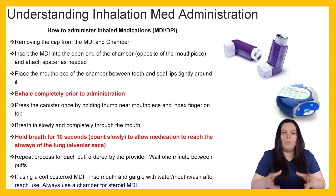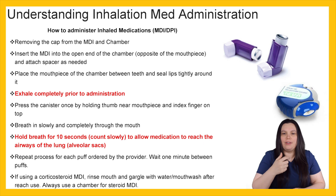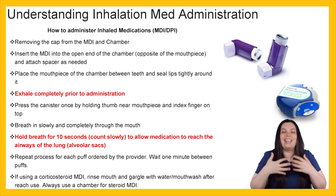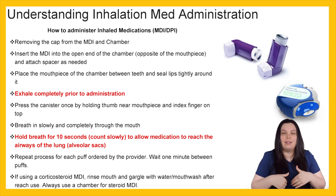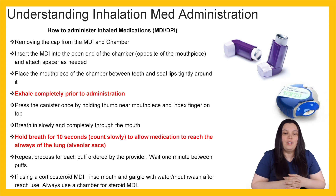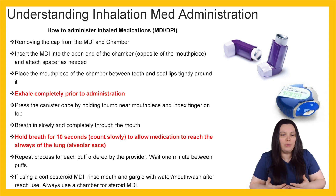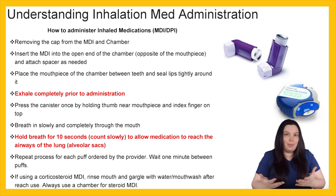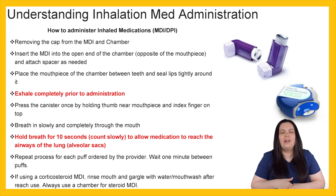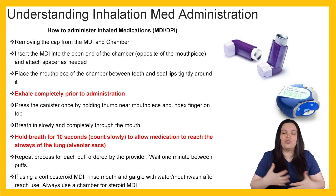They are going to press down the canister — that's the top part of the MDI — once, holding their thumb near the mouthpiece and index finger on the top. They're going to breathe in slowly and completely through their mouth; we don't want any nose breathing. Then ask them to hold their breath for 10 seconds, count slowly, and allow the medication to reach the airway of the lungs, also known as the alveolar sacs. Repeat this process for each puff ordered by the provider, waiting one minute in between puffs so the medication can distribute.